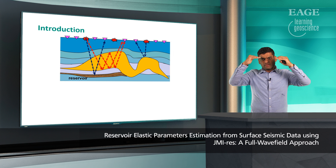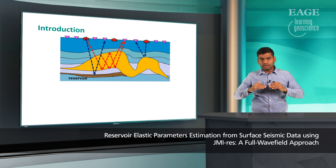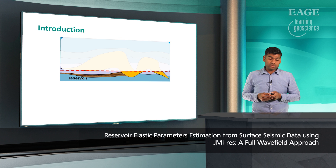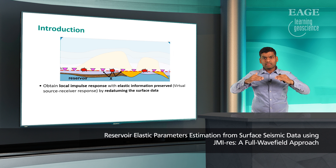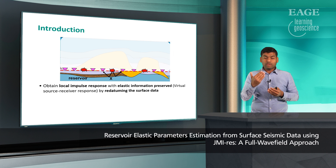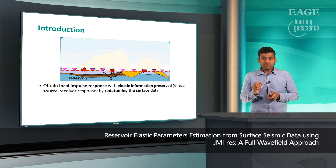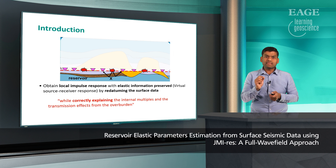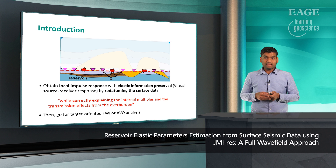Like astronomers, we cannot take our sources and receivers inside the earth's subsurface to avoid the scattering overburden. However, we understand the physics of wave propagation, so we can virtually create sources and receivers near the reservoir by redatuming the surface seismic data. By doing so, we create a virtual source-receiver response, which we call local impulse responses. When obtaining these local impulse responses, we must correctly explain the internal multiples and transmission effects associated with the overburden. We then apply target-oriented full waveform inversion or AVA analysis to estimate the reservoir elastic parameters.